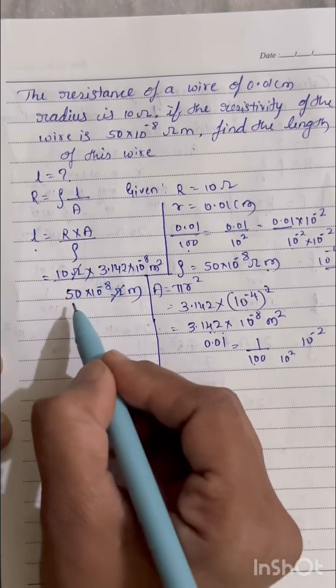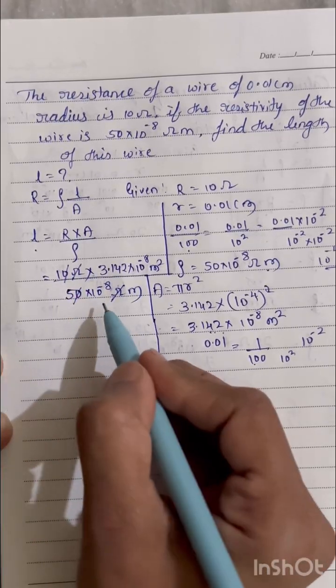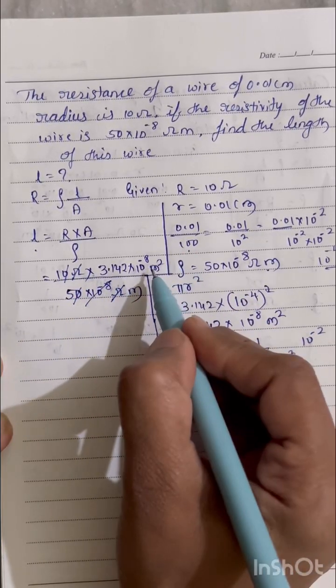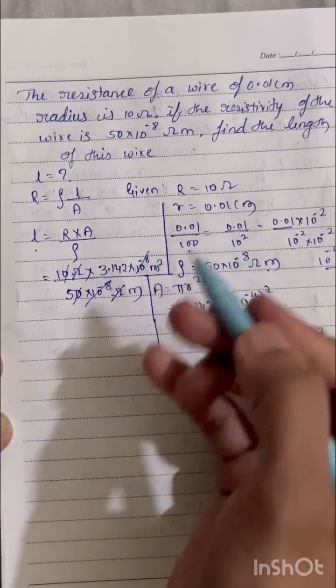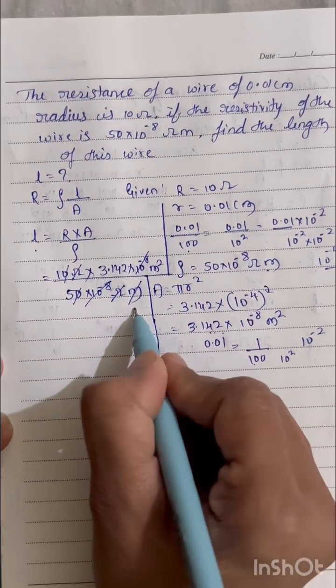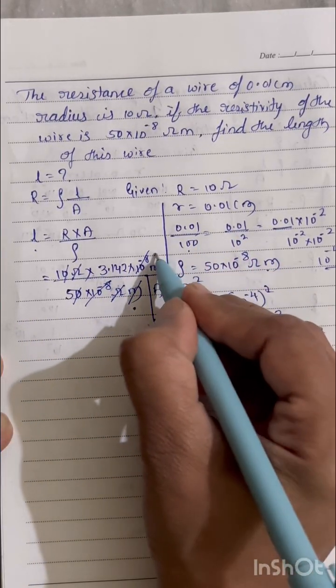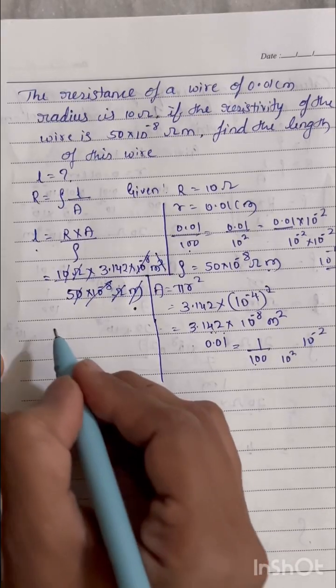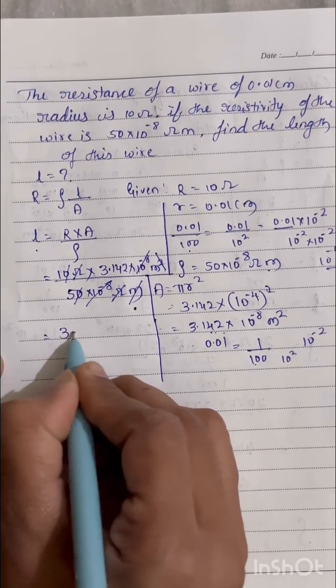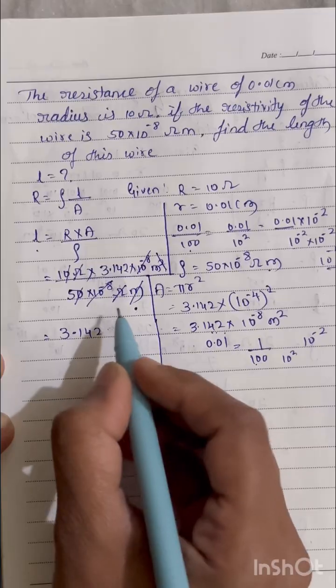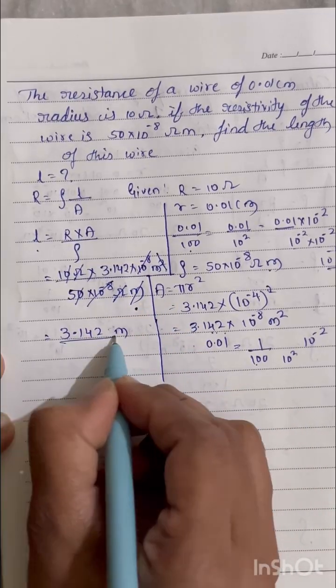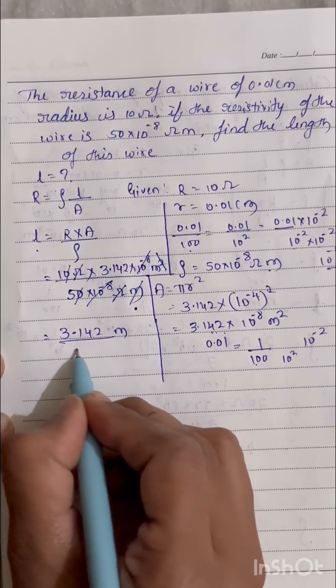See here, ohm ohm get cancelled, 10 power minus 8 from the numerator, 10 power minus 8 from the denominator, and 1 meter from the denominator and 1 meter from the numerator. So what is left, I am just writing here 3.142 and meter, divided by at the denominator I got 5 only.